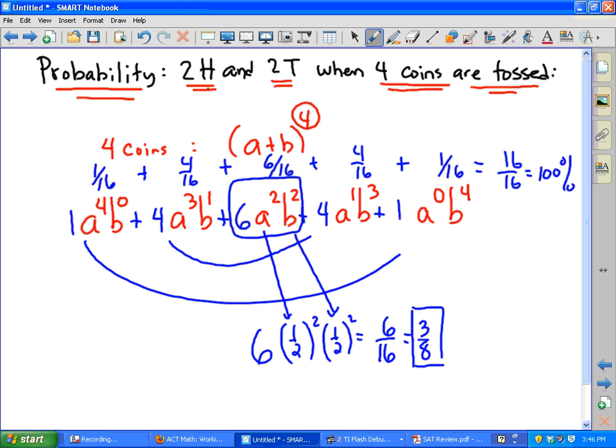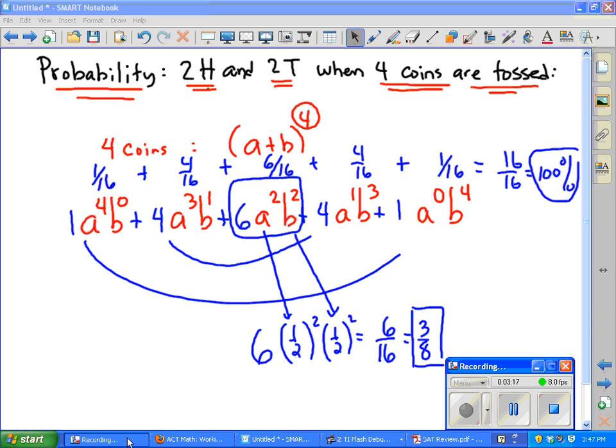And that covers all the possibilities. Because when you toss four coins, you could get four heads no tails, you could get three heads one tail, two and two, one and three, or zero and four. So the answer for this problem was three-eighths.